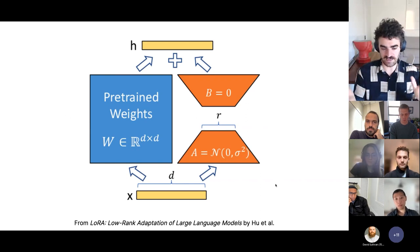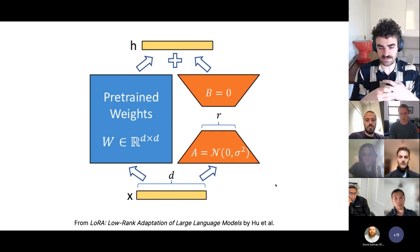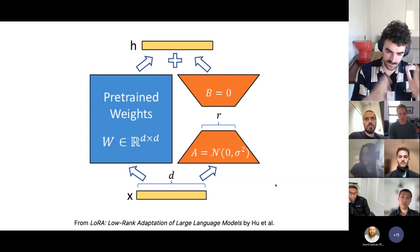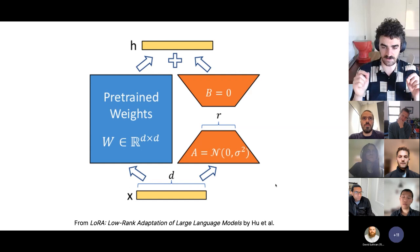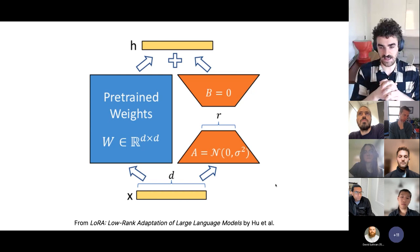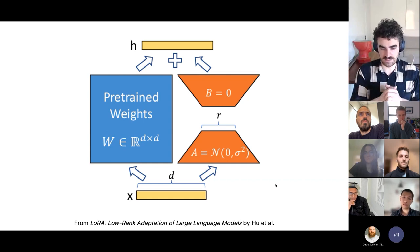Along slightly different lines is LoRa, which came out of MSR. What LoRa does is, for each weight matrix, it learns a low-rank update. You keep the pre-trained weights frozen, and you learn two low-rank matrices, compute their outer product, and add that to your weight matrix. The number of parameters you update corresponds to the rank of this update and can be a lot cheaper than updating the full matrix.